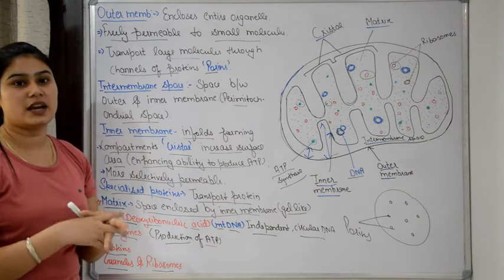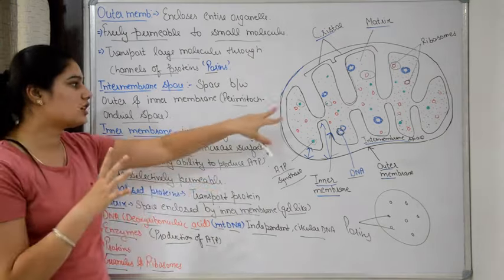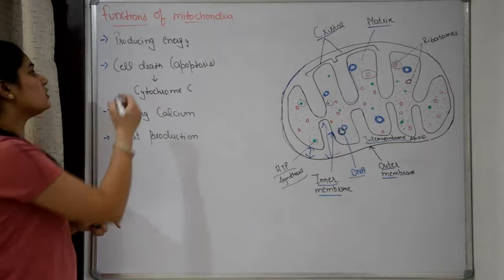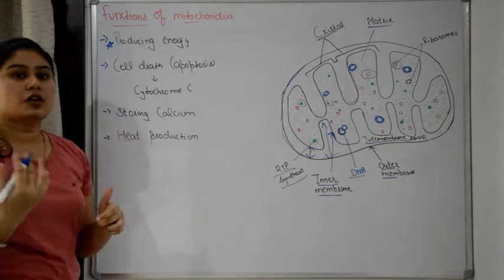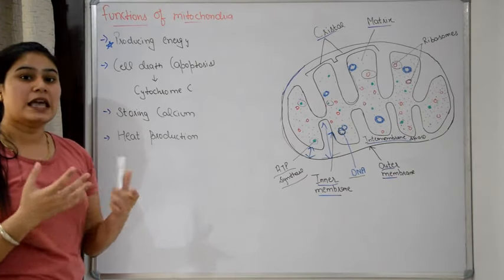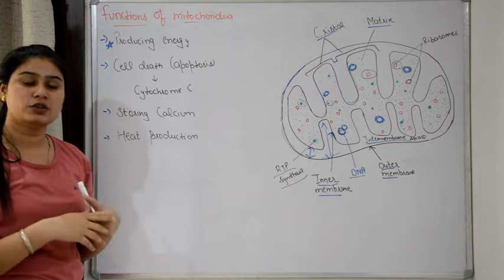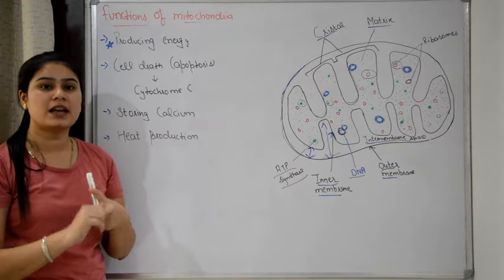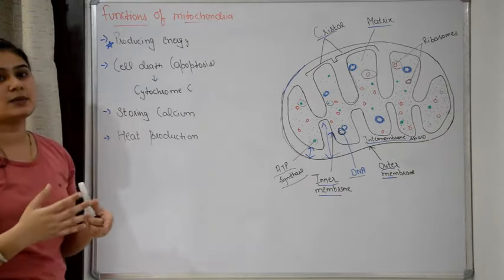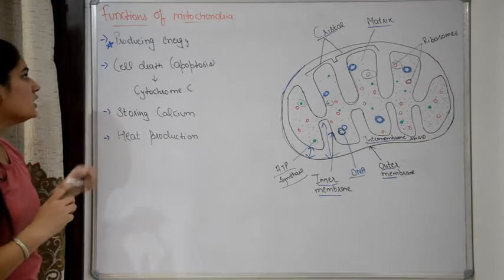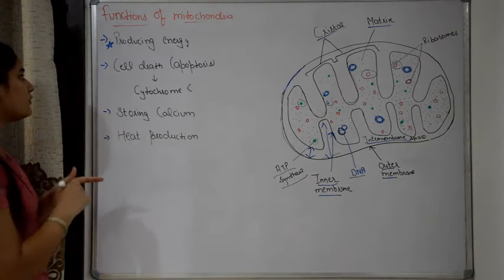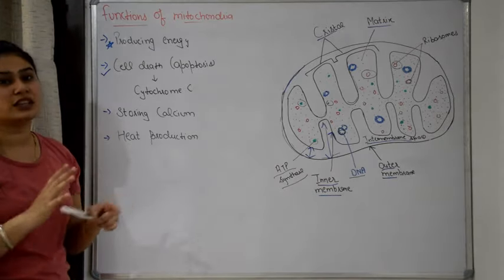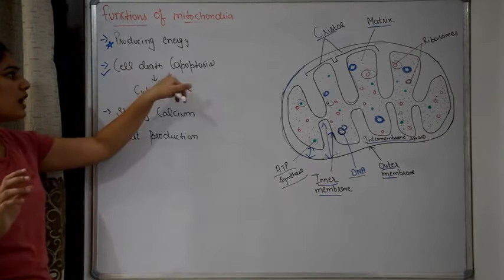So mitochondria has its own protein factories and DNA, making it a very special structure. Because it produces ATP, which is the cell's energy. Now let's look at the functions of mitochondria. One important function is producing energy — it produces ATP using the nutrients we eat, converting them in the presence of oxygen through aerobic respiration. Another function is cell death, which is called apoptosis.